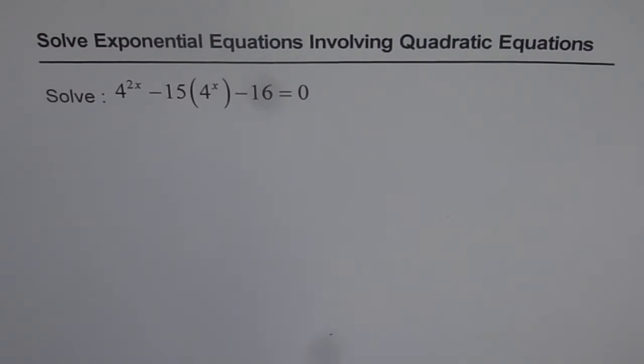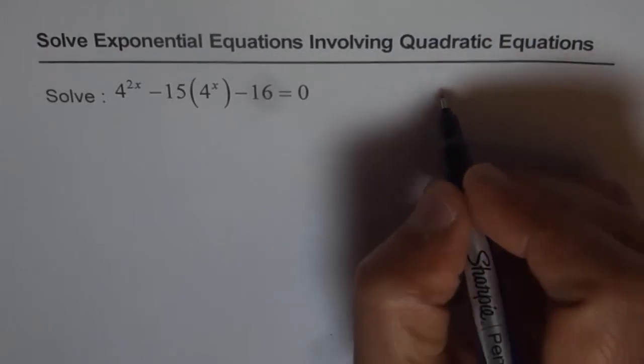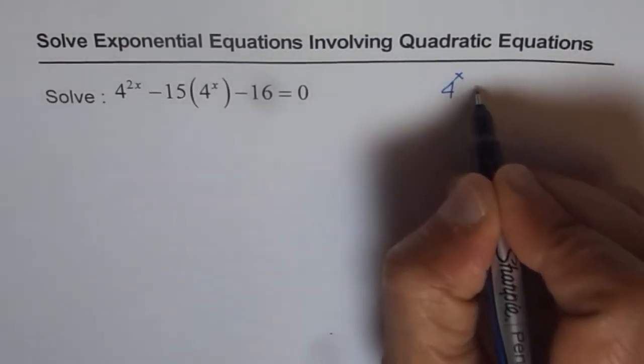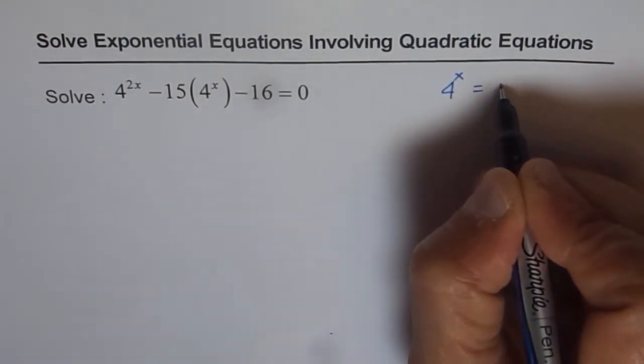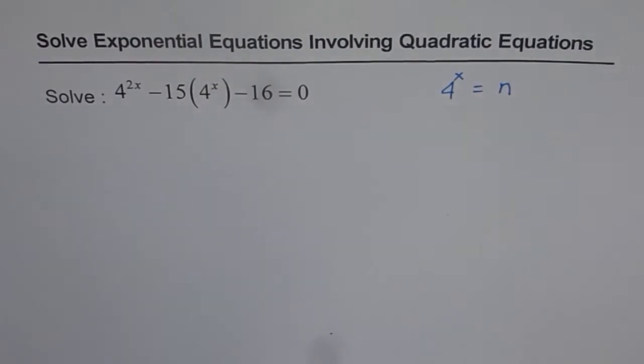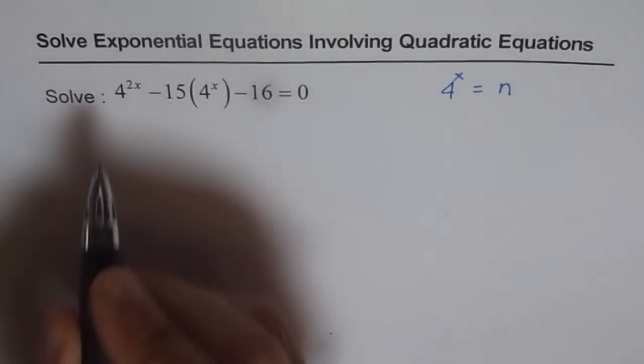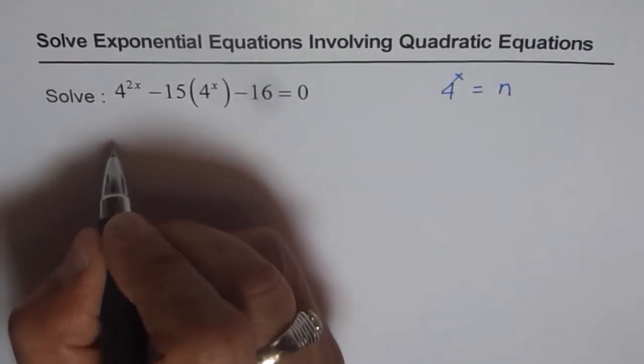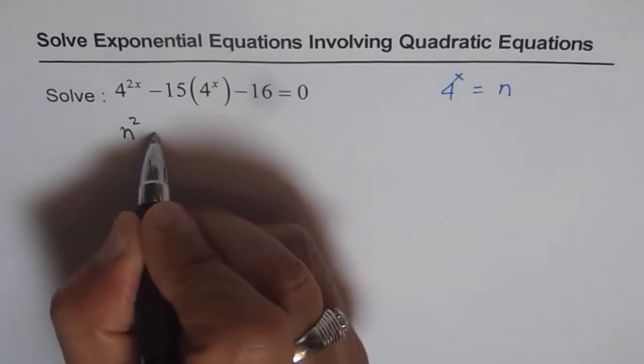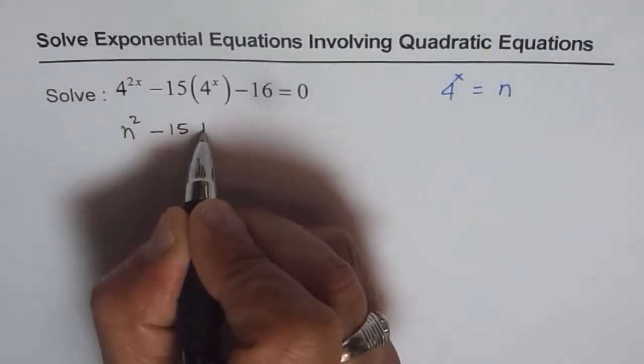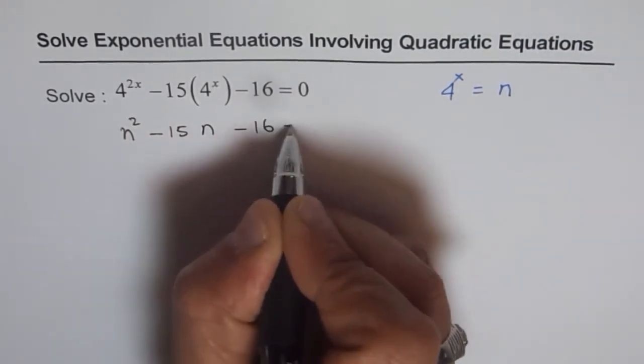Now here is how I will do it. We will do a simple substitution - we will write 4^x = n. If we do that, we can replace this equation in terms of n. So 4^(2x) becomes n^2 - 15n - 16 = 0.